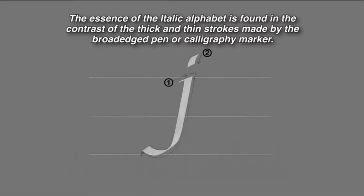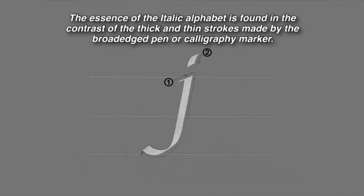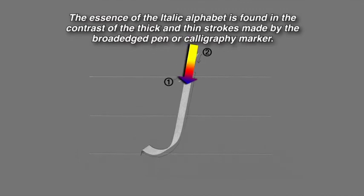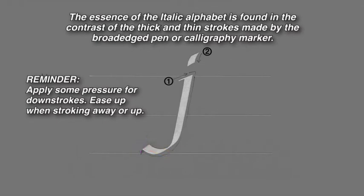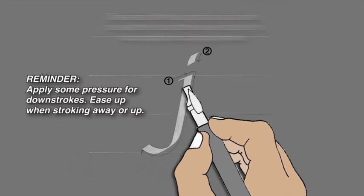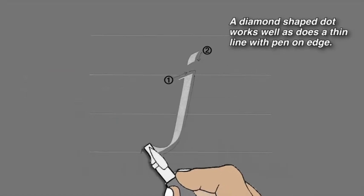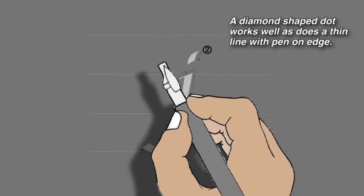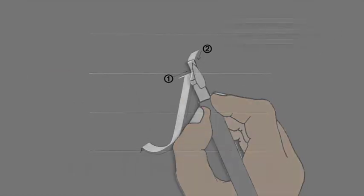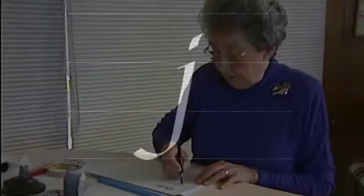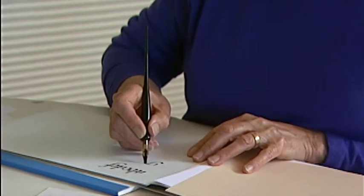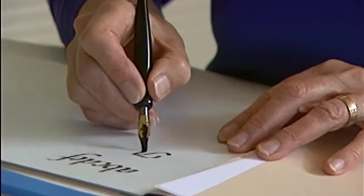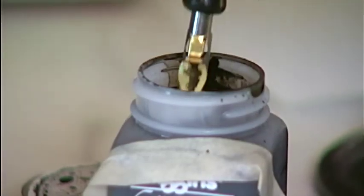The J is created using two strokes. The essence of the italic alphabet is found in the contrast of the thick and thin strokes made by the broad-edged pen or calligraphic marker. The dot can be finished in much the same way as the dot on the I was done, by guiding your pen from above the letter into a short down stroke. Remember your posture as you are practicing. This will help in creating good form. If you're comfortable, it will help you to concentrate on the letter forms.